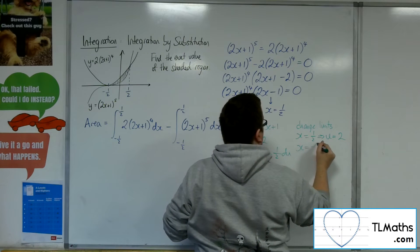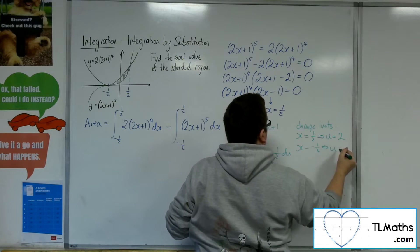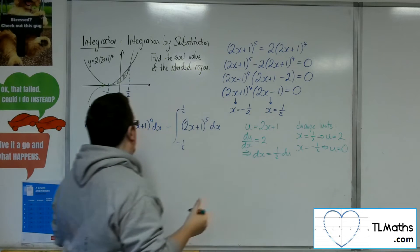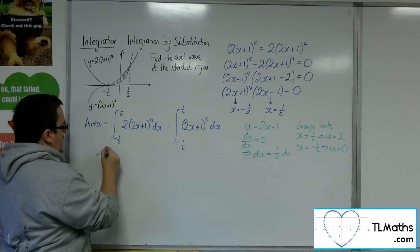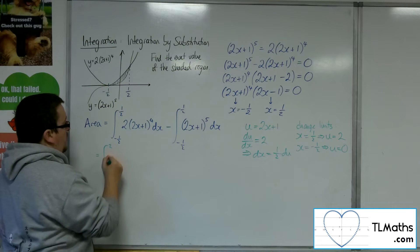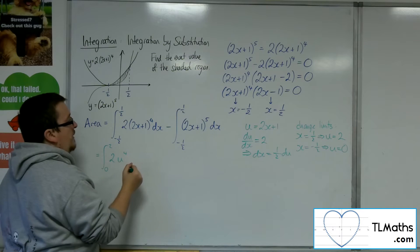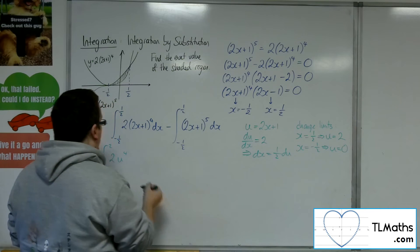And when x is minus a half, 2 lots of minus a half is minus 1 plus 1. So we get 0. So we'd be integrating between 0 and 2, 2 lots of u to the 4 times by 1 half du.